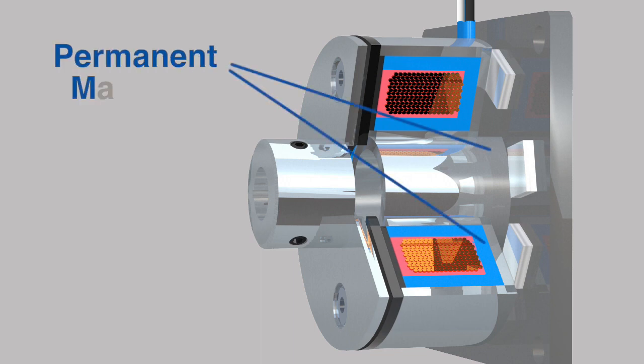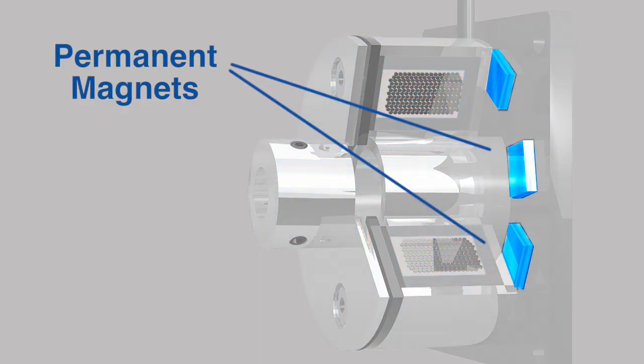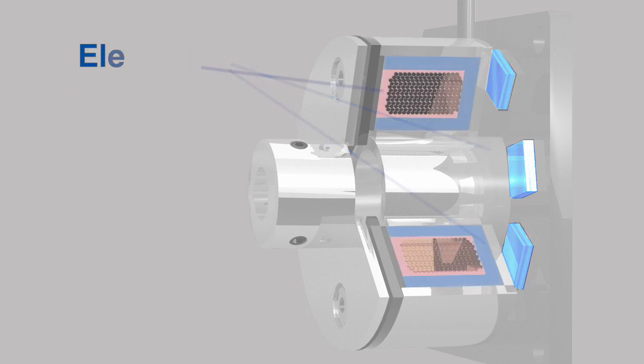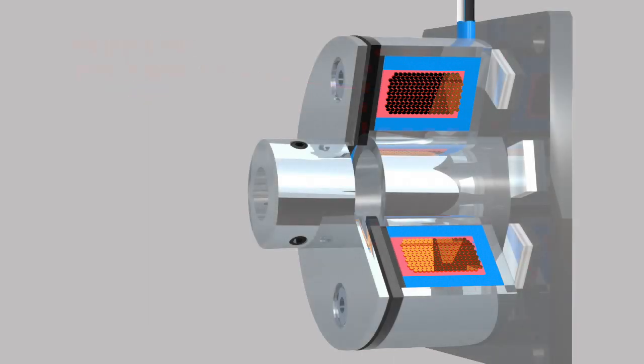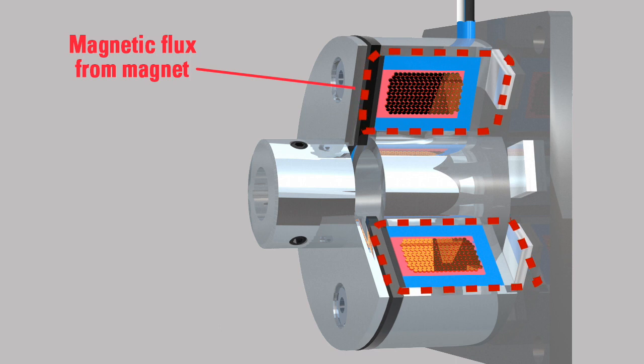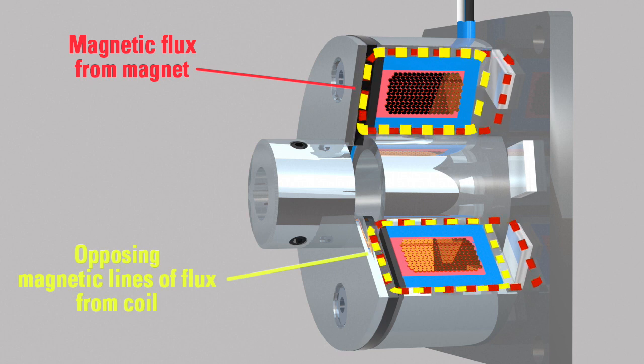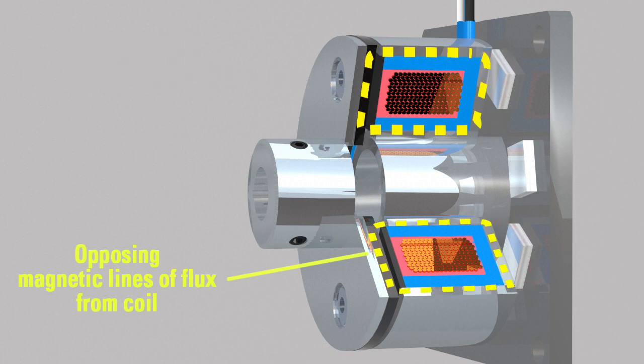Permanent magnet brakes transmit torque via magnetic attraction and use a DC electromagnetic field to release or counteract the permanent magnet. Brakes are engaged magnetically and disengaged electrically. Permanent magnet brakes are polarized in order to cancel the field from the permanent magnets. The energized coil creates an opposing magnetic field.